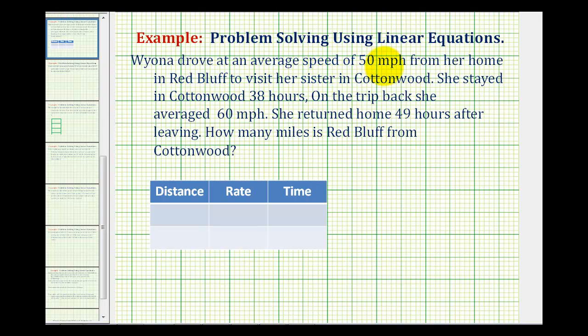Wyonna drove an average speed of 50 miles per hour from her home in Red Bluff to visit her sister in Cottonwood. She stayed in Cottonwood 38 hours. On the trip back she averaged 60 miles per hour. She returned home 49 hours after leaving. How many miles is Red Bluff from Cottonwood?